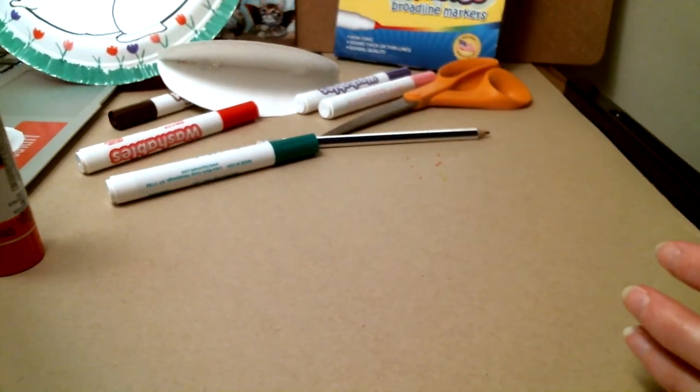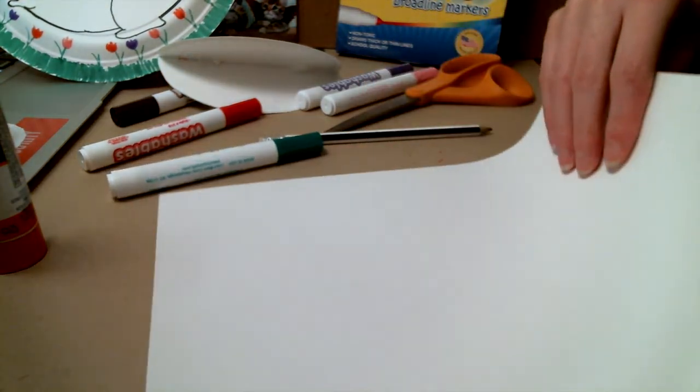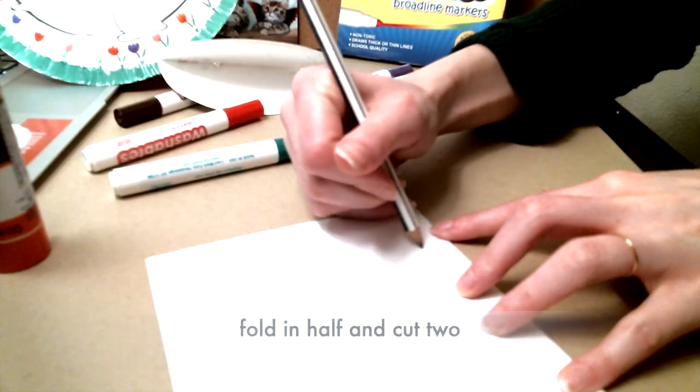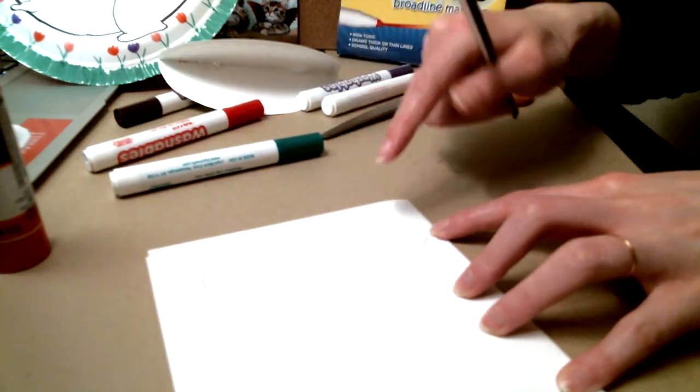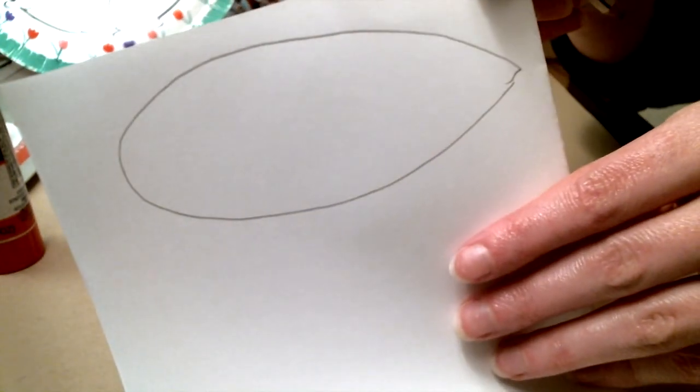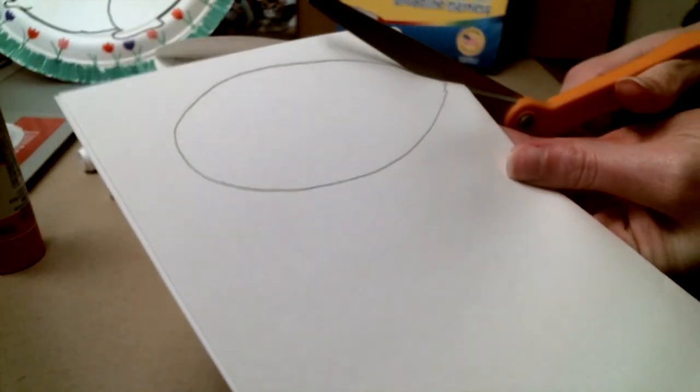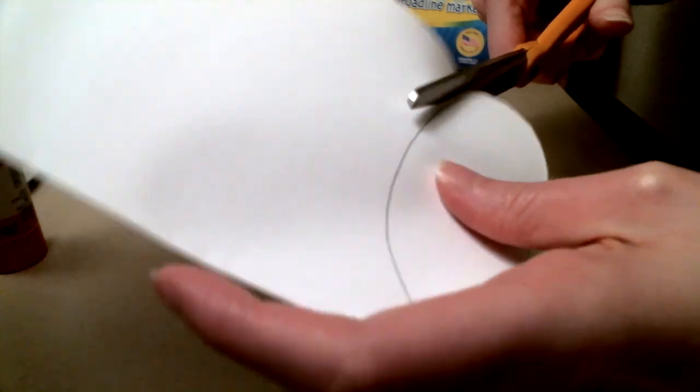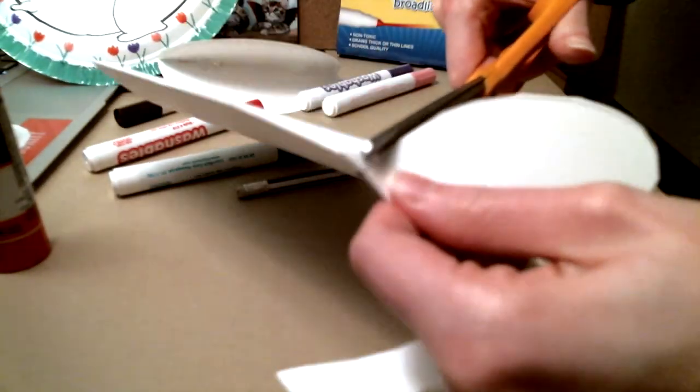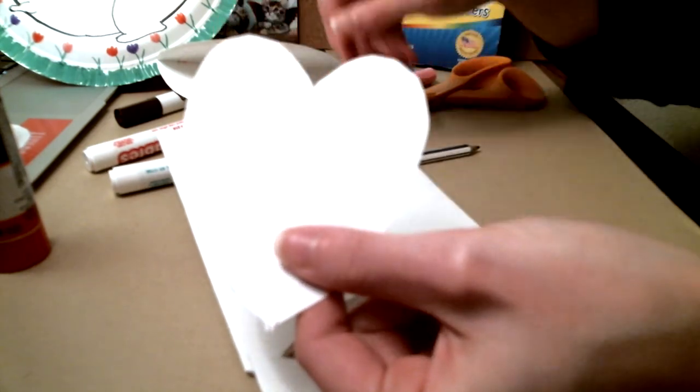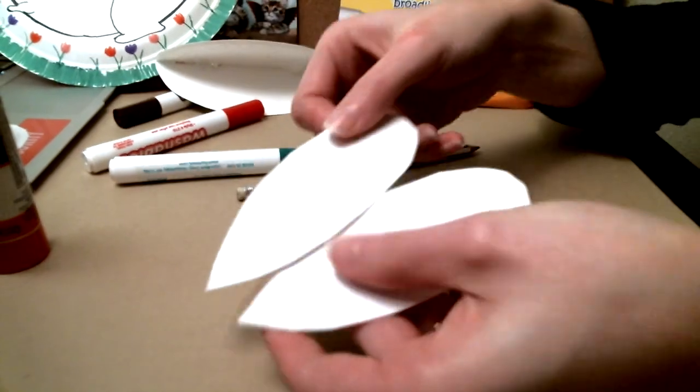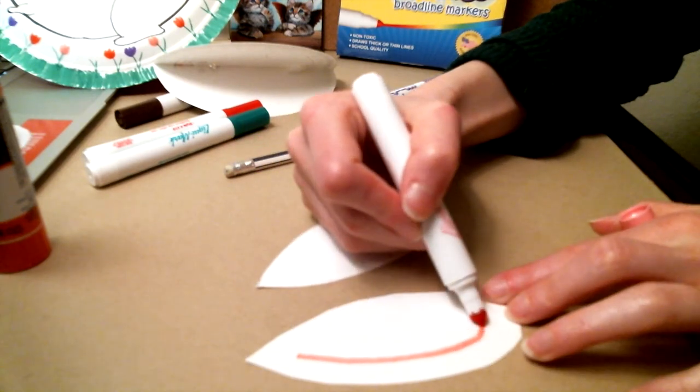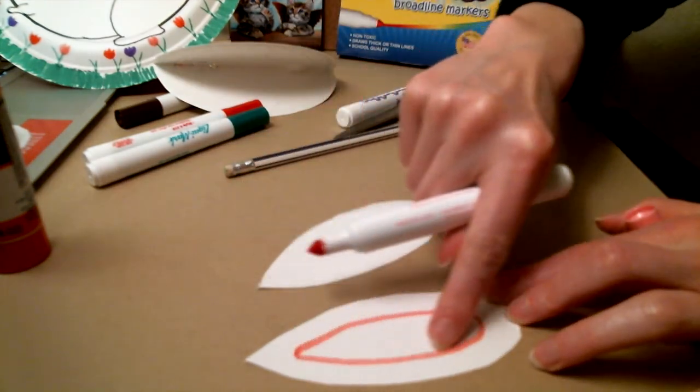Now, for the ears, we can take a regular piece of paper or a scrap piece of paper, fold it in half, and draw some big bunny ears. And then, cut.